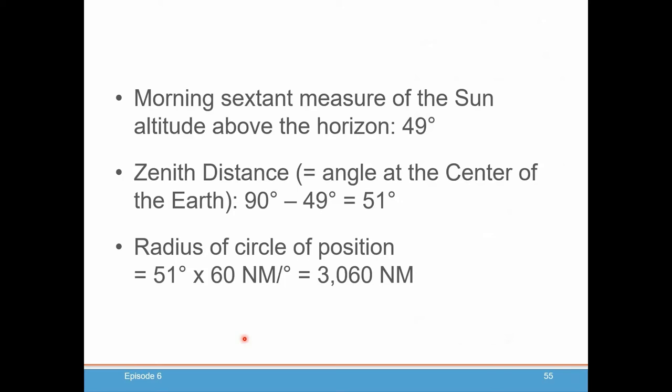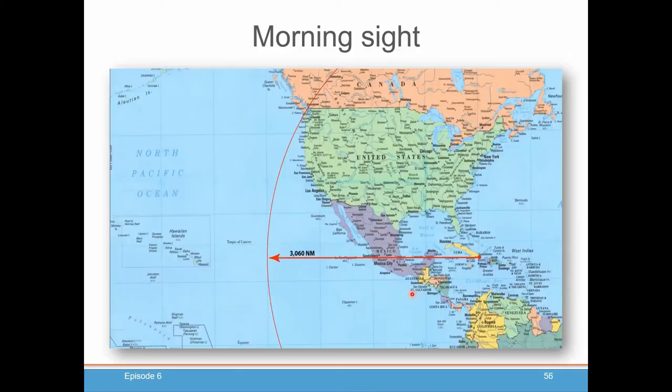At the same time that we looked that up in the almanac, we saw that our sextant was 49 degrees measure of the sun's altitude above the horizon. We calculate our zenith distance, which was 90 minus our height, which is 51 degrees. And then we find what our circle of position radius is. 51 degrees times 60 is 3,060 nautical miles from Guantanamo Bay. We take out our Mercator map, and we start at Guantanamo where the sun was over. And we measure 3,060 nautical miles, and we draw a circle, part of an arc of a circle.